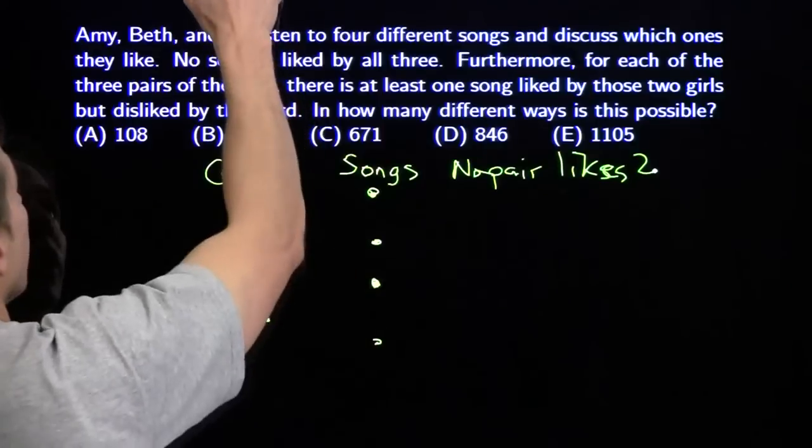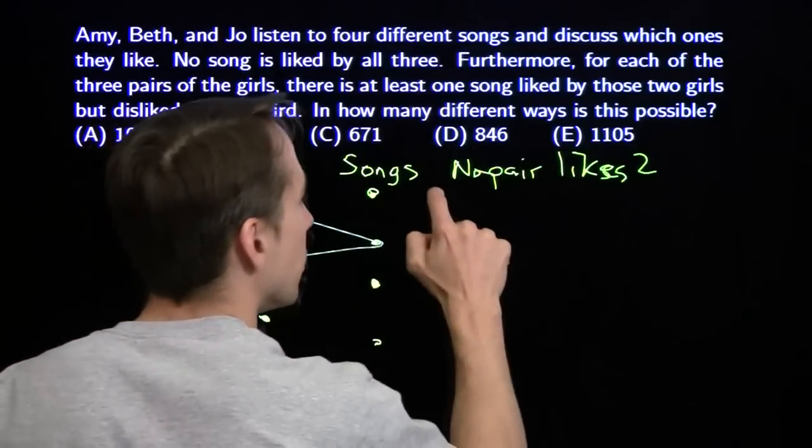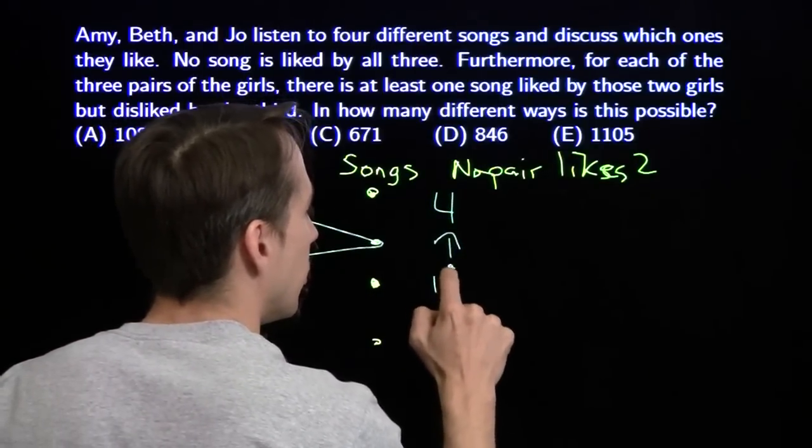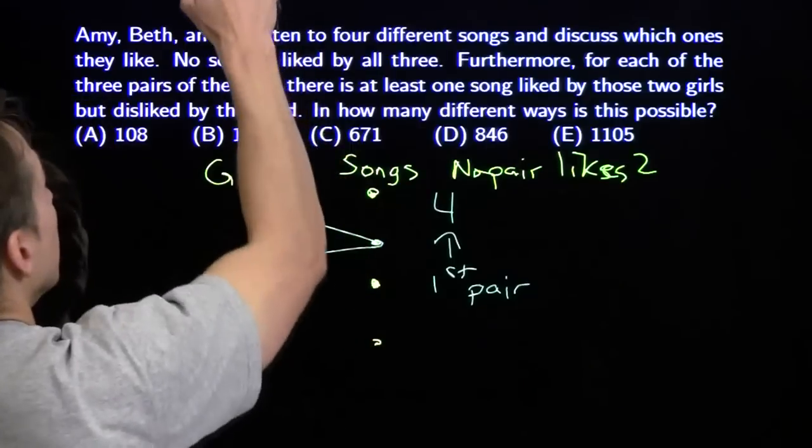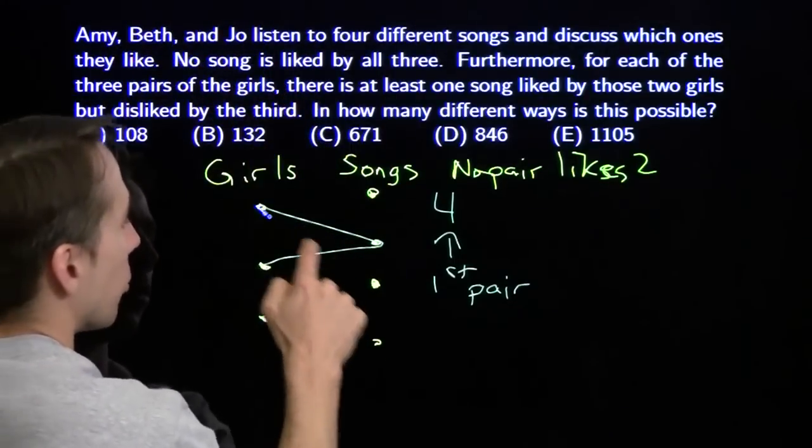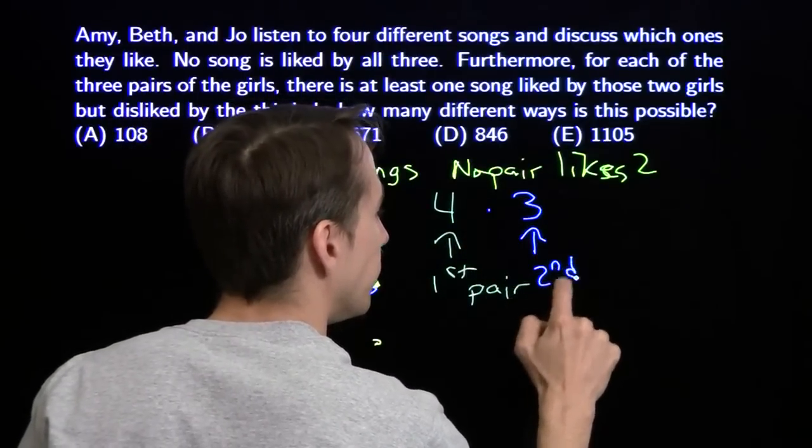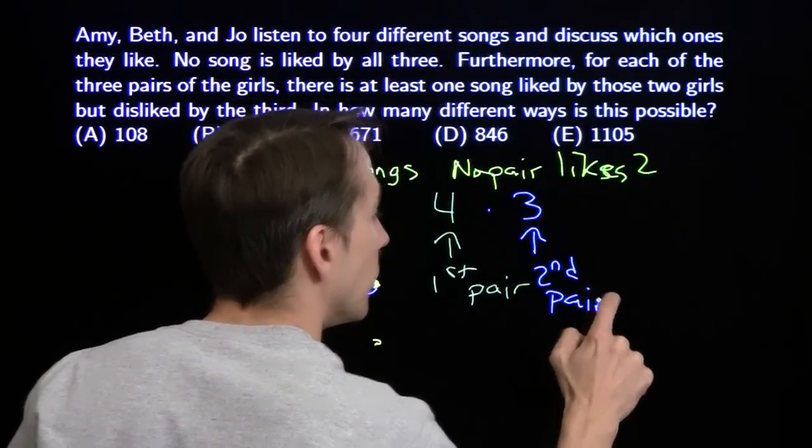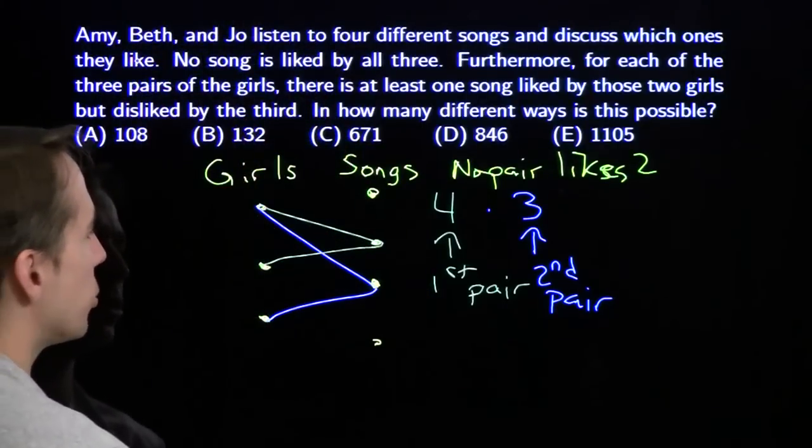All right, once again, we'll start off with our first pair of girls. They have four choices. And that means our second pair has three choices. And then our third pair has two choices.